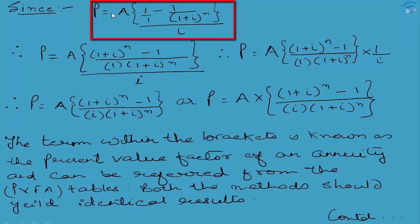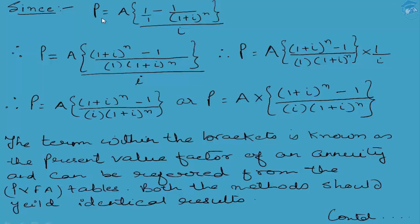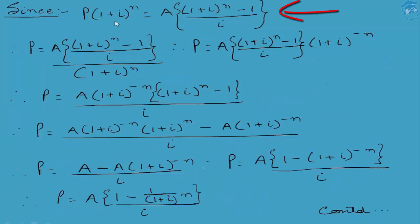During our last discussion we started the derivation, and by the time we closed our discussion we were almost near the completion of the formula. So before we proceed, let's take the formula once again. The formula started from P(1 + i)^n = A × [(1 + i)^n - 1] / i. That is the future value of the present lump sum. This lump sum was obtained by calculating the present value of the future annuities.